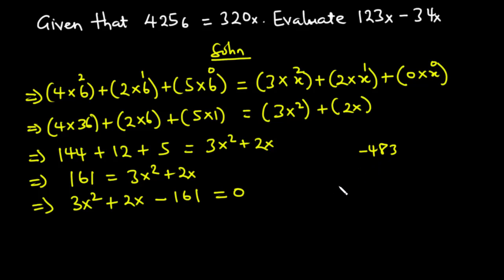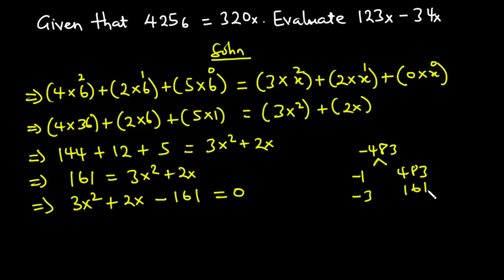We need to find two numbers that multiply to give negative 483 and add to give positive 2. The factor pairs of negative 483 include: negative 1 and 483, negative 3 and 161, negative 7 and 69, and negative 21 and 23. We are going to use negative 21 and 23.